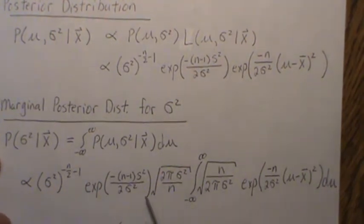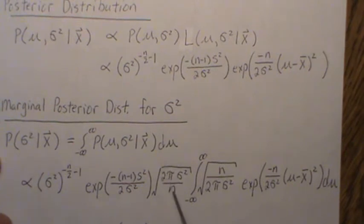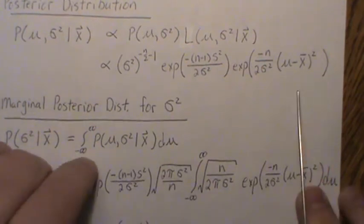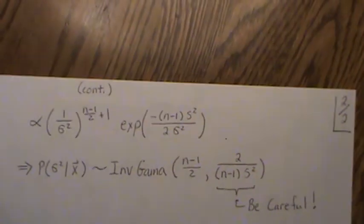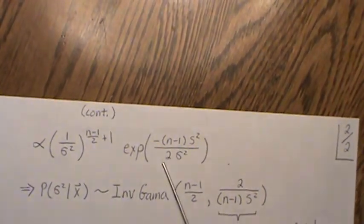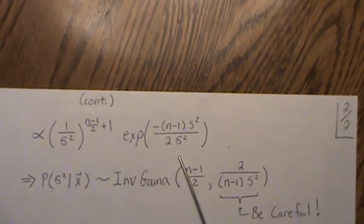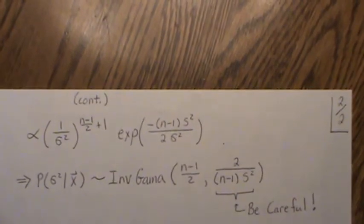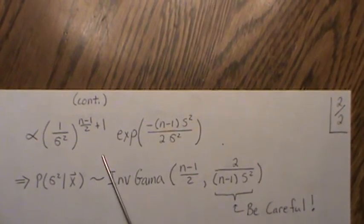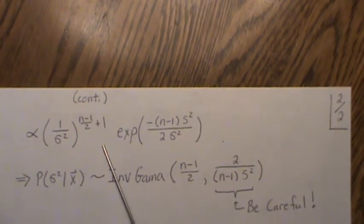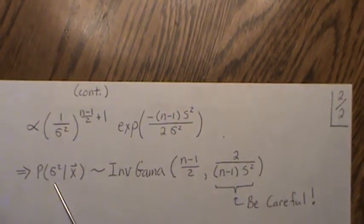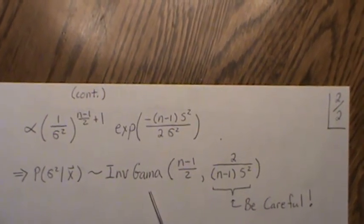After integration, the constants two-pi and n are pulled out, and the sigma squared to the one-half term is absorbed, leaving a expression in sigma squared. This has the functional form of an inverse gamma distribution, so we know that multiplying by the right normalizing constants — which we can recover — gives us the full distribution. The posterior distribution of sigma squared given the data is therefore an inverse gamma distribution.